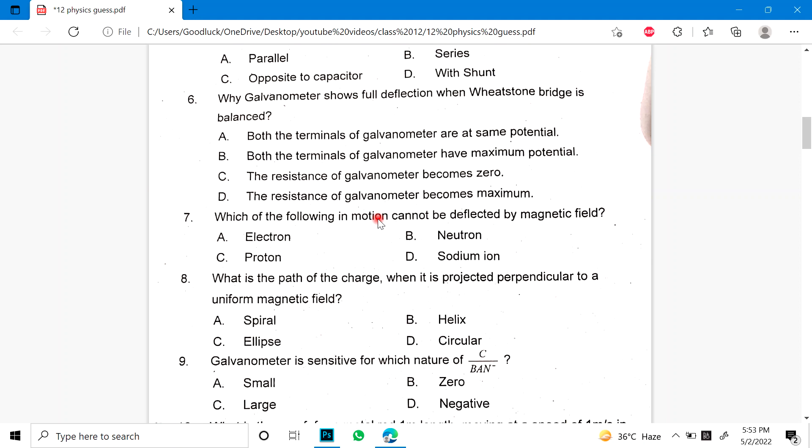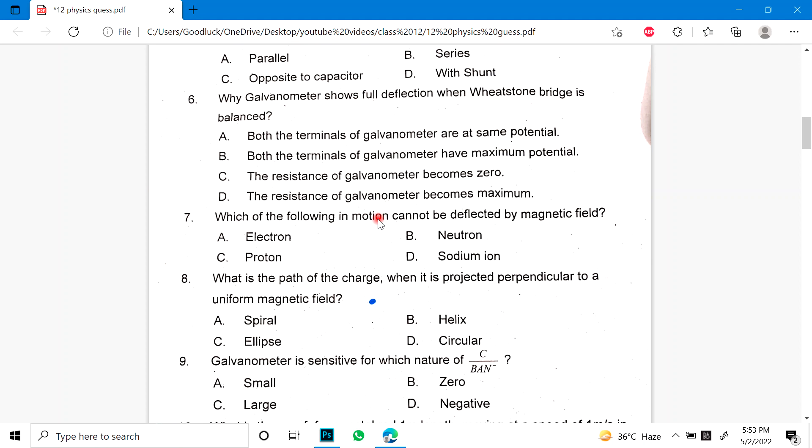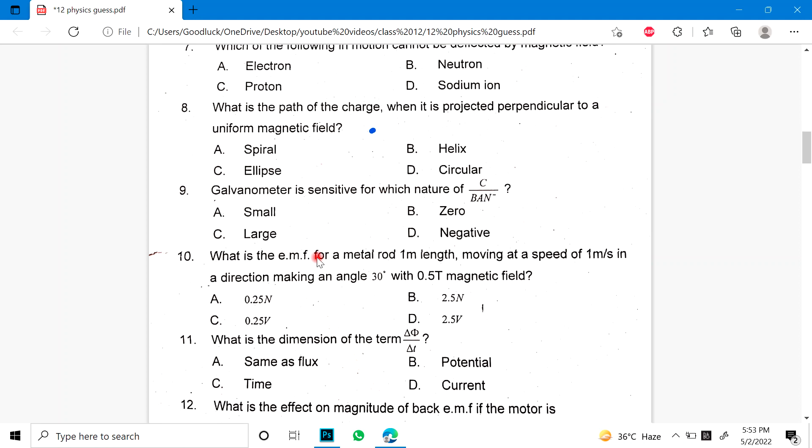Number 7 is: Which of the following in motion cannot be deflected by magnetic field? Electron, neutron, proton and sodium ion. 8: What is the path of the charge when it is projected perpendicular to the uniform magnetic field? 9: Galvanometer is sensitive for which nature of C over BAN. 10: What is the EMF of a metal rod 1 meter length moving at a speed of 1 meter per second in a direction making an angle 30 degree with 0.5 magnetic field? So this is a problem type question.